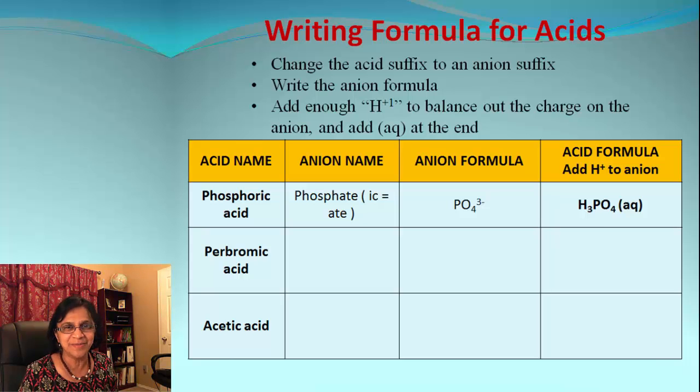All right, let's find out how to write down the formula when the acid name is given. We need to find out the anion present in an acid, and how do we find that? We look for the acid suffix and then that leads us to the anion suffix.